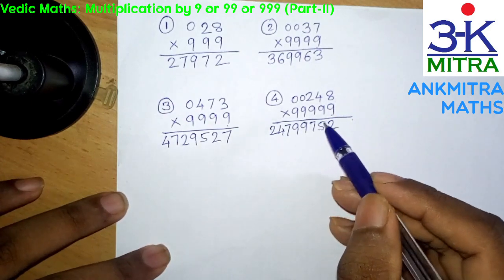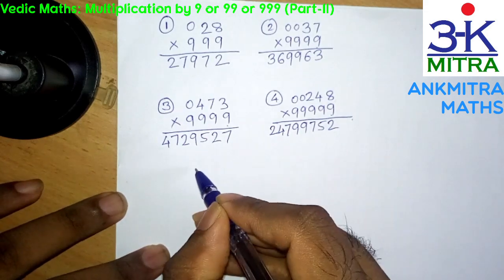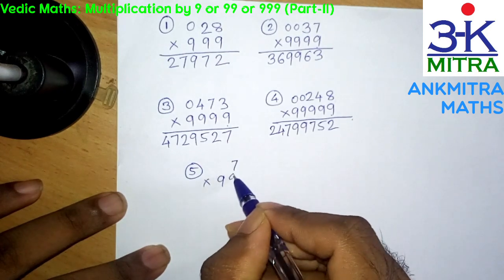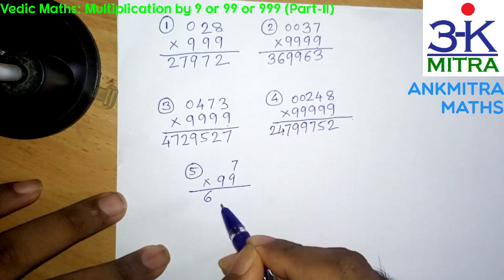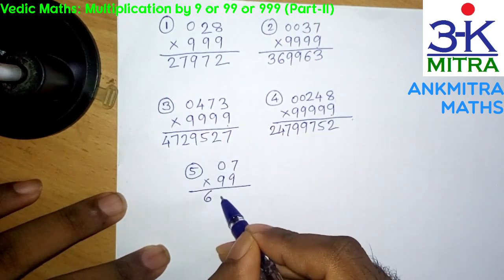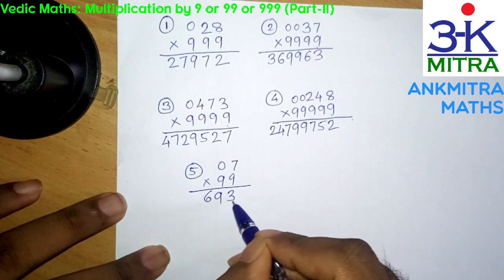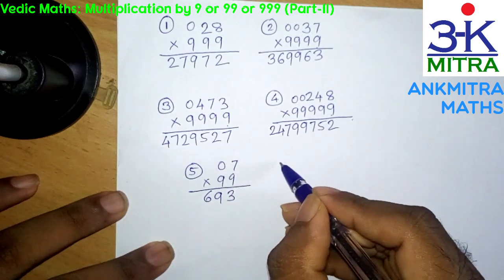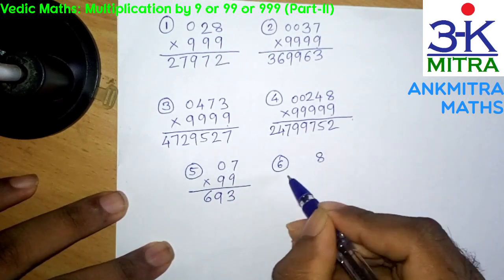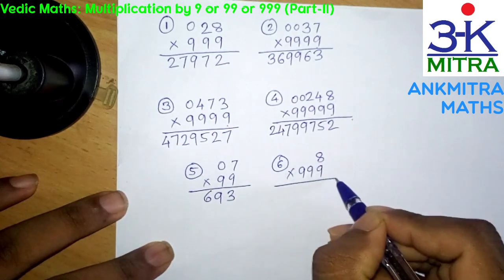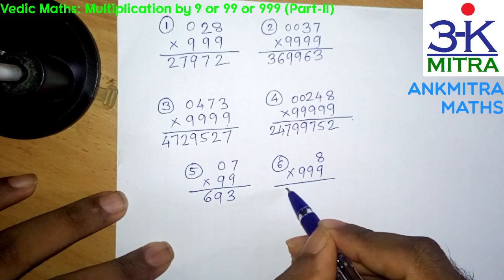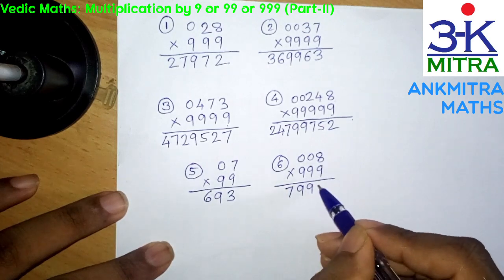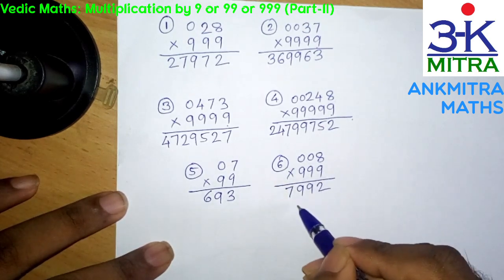This method works even for single digits. Suppose we multiply 7 by 99 — reducing 1 from 7 we write 6 here, imagine a 0, then 9 minus 0 is 9 and 10 minus 7 is 3, giving the answer 693. Now suppose we have more 9s — take 8 multiplied by 9999. Similarly reduce 1 from 8, write down 7, imagine 2 zeros, then 9, 9, and 10 minus 8 is 2. So 8 multiplied by 9999 is 7992.